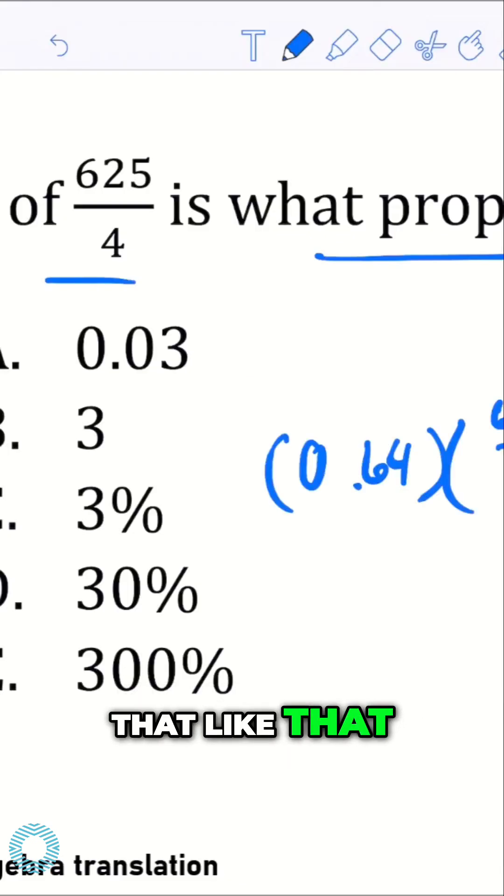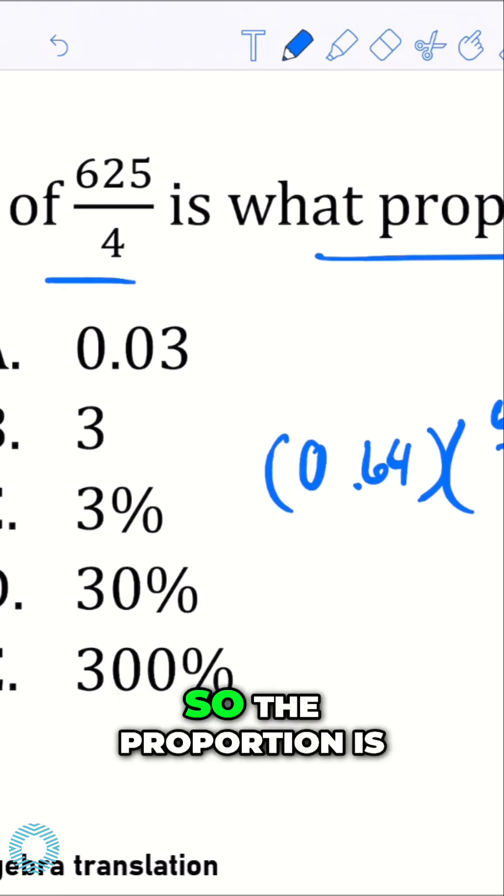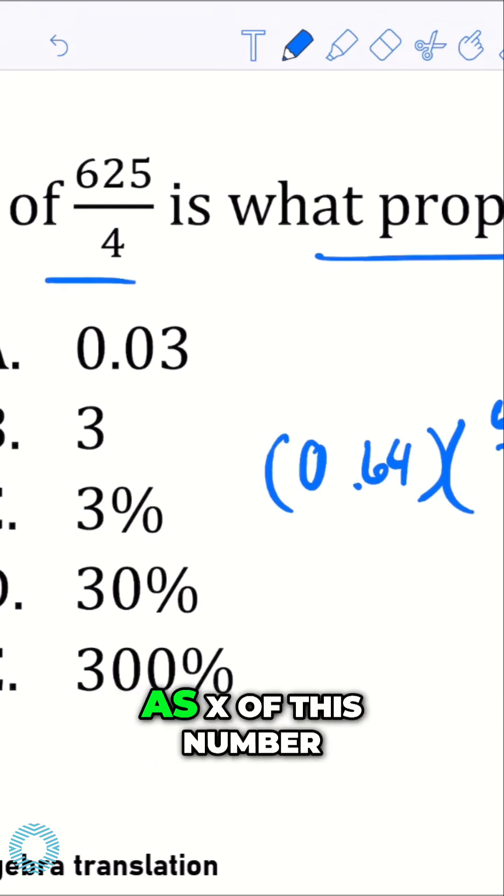So we'll just write that like that. Is, that reduces to just an equal sign, right? What proportion - I'll mark that as x. So the proportion is the unknown, we'll just write it as x, of this number. So note what I did.